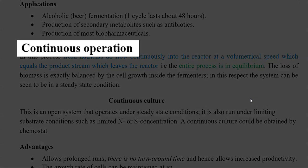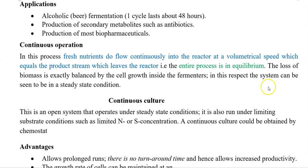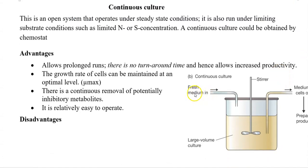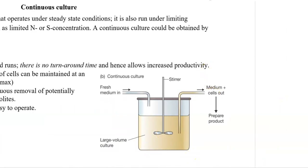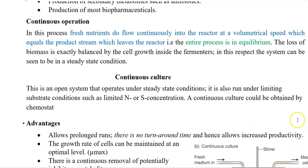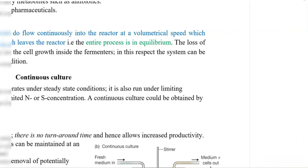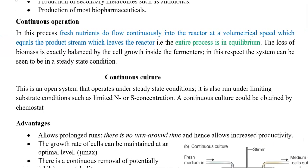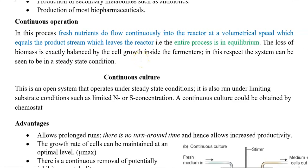The next topic is continuous culture, also referred to as a continuous operation system. It is a system in which fresh nutrients flow into the vessel while used-out nutrients and cells are simultaneously removed. That is the reason it is referred to as a continuously operating or continuous culture, and the entire process remains in equilibrium.